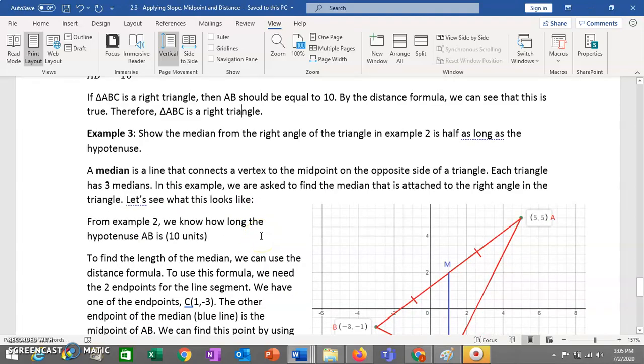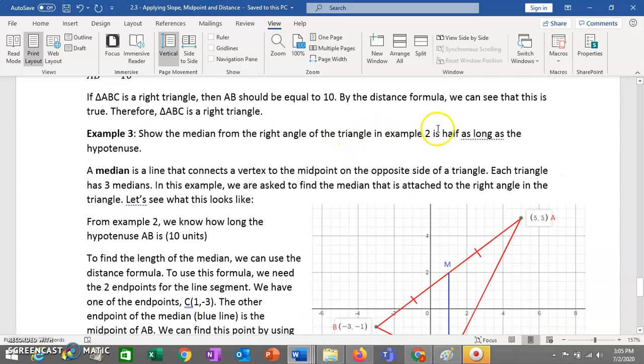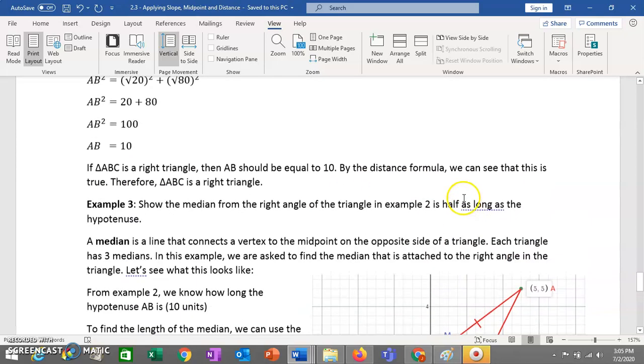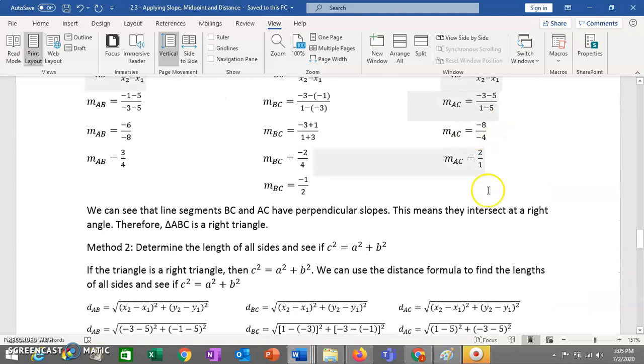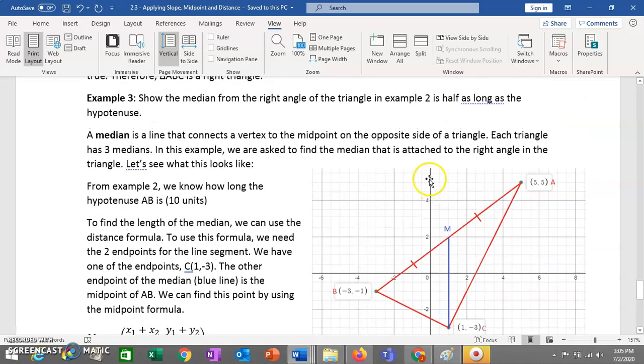Alright, last question. In our last question, we are going to be using a different term here. We're going to be using this term median. So we want to show that the median from the right angle of a triangle is half as long as the hypotenuse. And we're going to use the same triangle that we had in example two. So it's the same triangle, but I've just drawn this new thing on here, which is a median. So what is a median?